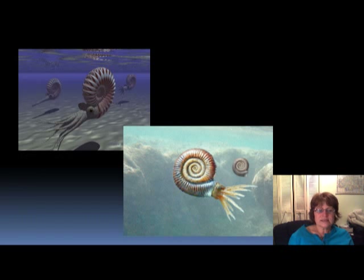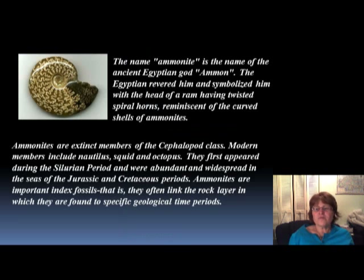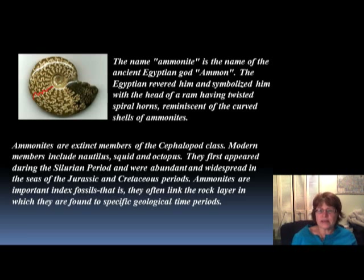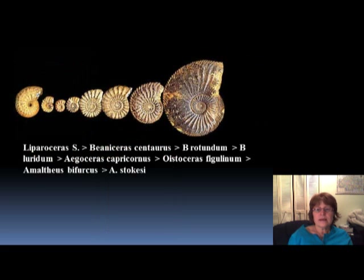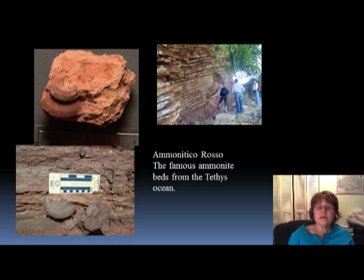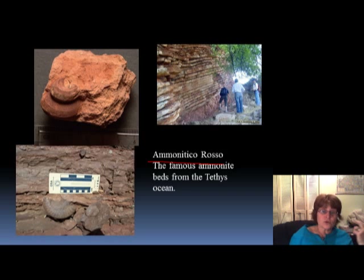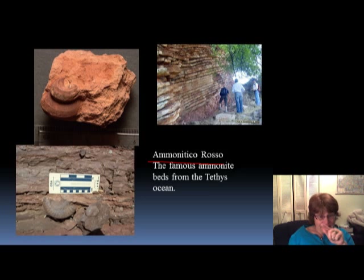The Ammonites are very good index fossils because of their so-called lobe lines — the pattern of lobe lines changed every two million years, which made them really useful for dating. They were very typical in deep-water limestone called Ammonitico Rosso, which is famous everywhere in Europe. Almost every country in Europe has this rock in its metros, churches, and famous buildings. When polished, it has lots and lots of Ammonites — it's really beautiful.